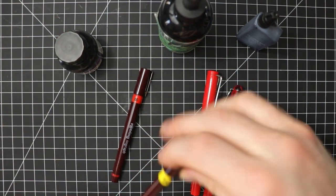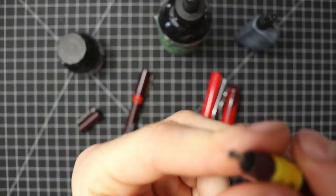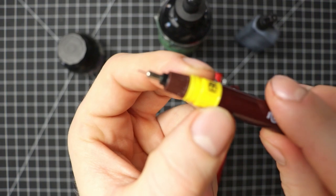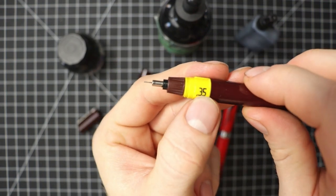So the rotring Isograph, to give you a more detailed look at this. As you can see here the tip of the pen, it's got a really fine nib on it. This one is the point three five.